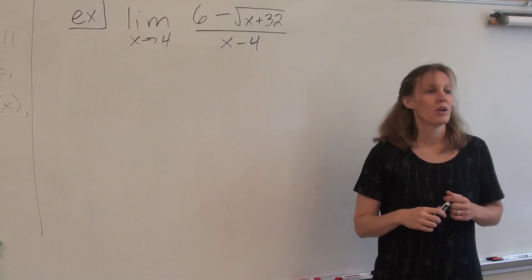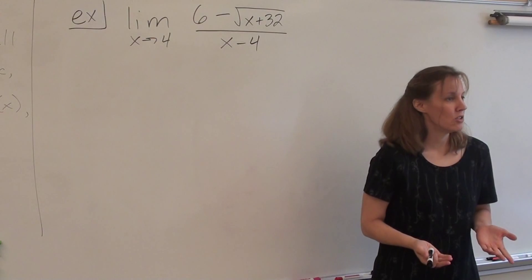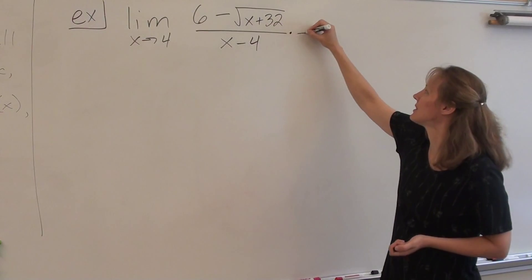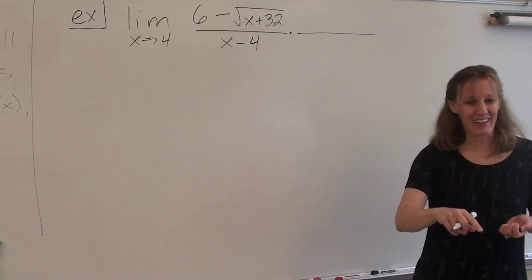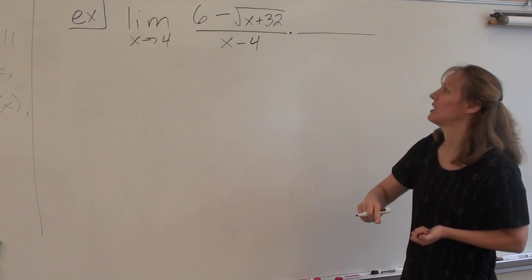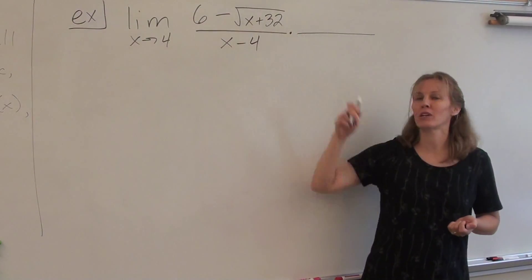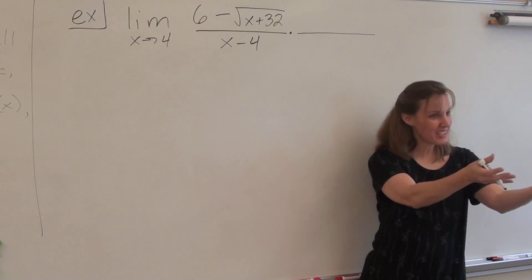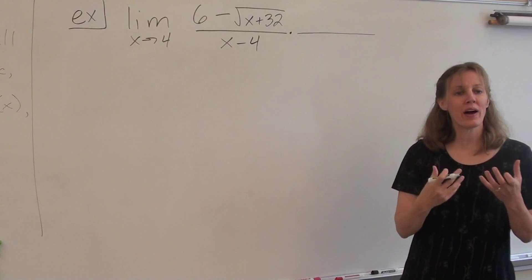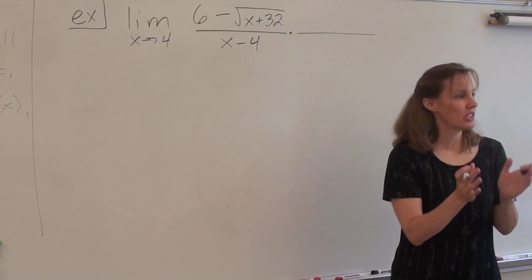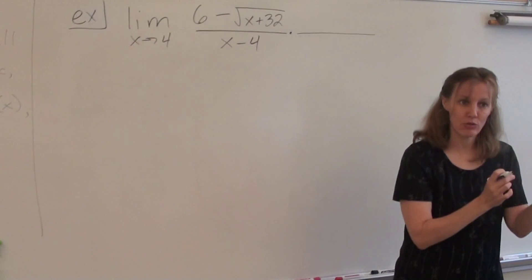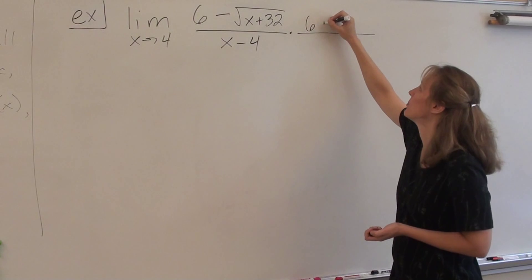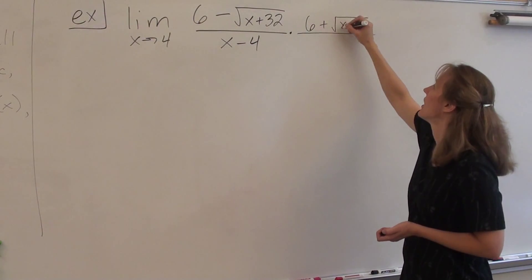So how on earth are we going to get an x minus 4 out of this thing? We're going to rationalize the numerator — we're going to multiply top and bottom by the conjugate. When you're finding a conjugate, you're just changing the sign that separates the terms; you don't change every sign you see. So the conjugate is 6 plus root of x plus 32.